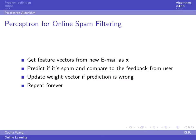If we are right, we just do nothing. If it is a +1 instance but we predict it as -1, we add the feature vector to the weight vector. Or if it is a -1 instance and we predict it as +1, we subtract the feature vector from the weight vector.